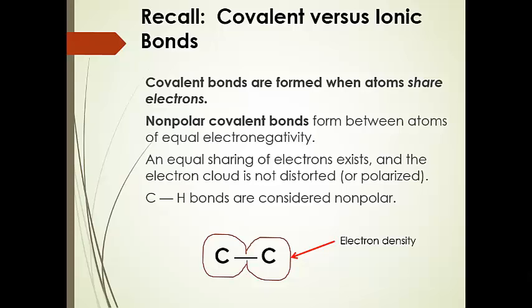Covalent bonds are formed when atoms share electrons. Sharing electrons results in covalent bonds. Nonpolar covalent bonds form between atoms of equal electronegativity — if the electronegativity is exactly equal, it's a fully nonpolar covalent bond. An equal sharing of electrons results in an electron cloud that's not distorted or polarized in any way. In general, carbon-hydrogen bonds are considered nonpolar, even though there is a small electronegativity difference. Here's a cartoon showing the electron cloud around two carbon atoms, which have the same electronegativity, so the electron cloud is undistorted and symmetrical around both atoms.